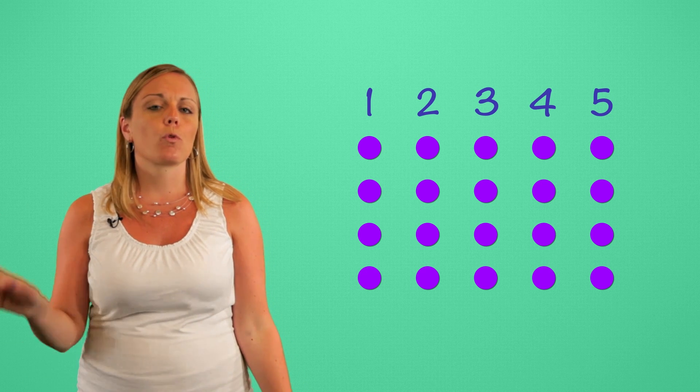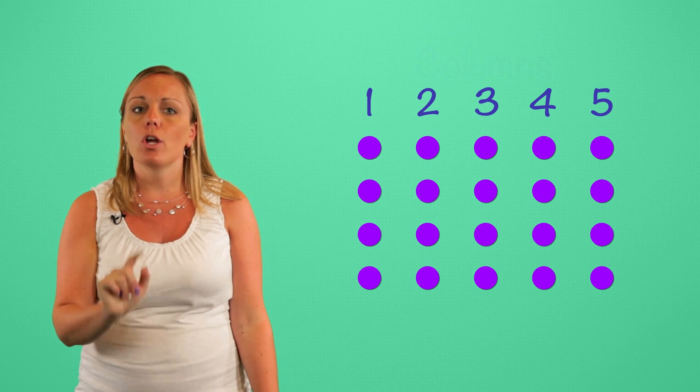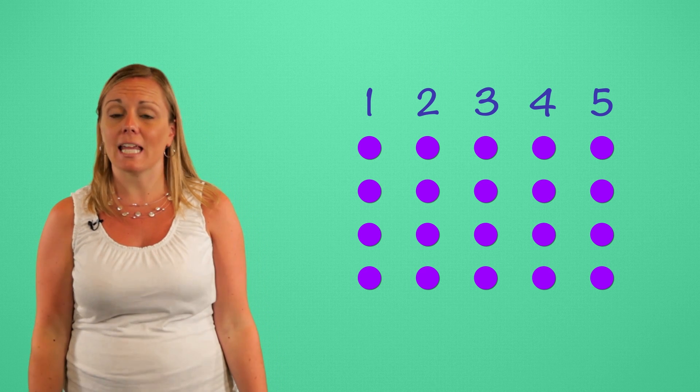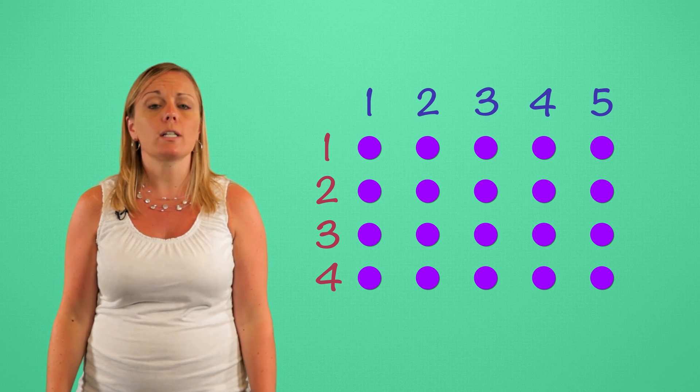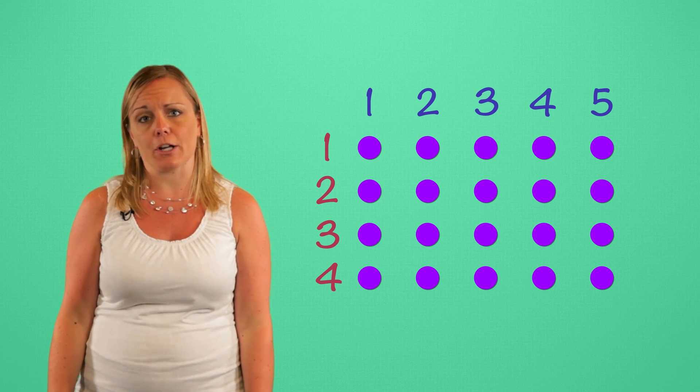So four teams, let's look at that visually. Here's an array of our 20 total players. Since there's teams of five, I'll arrange them in five columns. Remember, columns go up and down. So there's five columns and it gives us four rows. These four rows show us the four teams of five players in each.